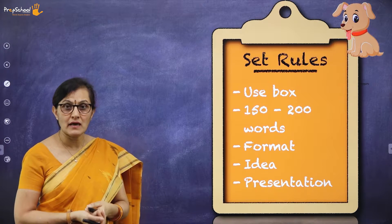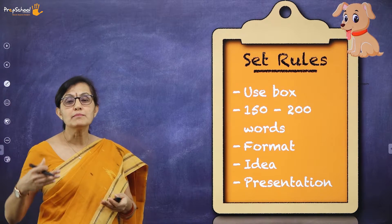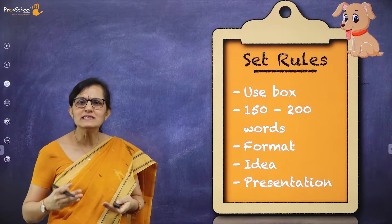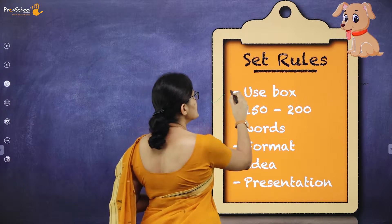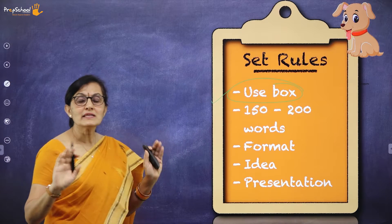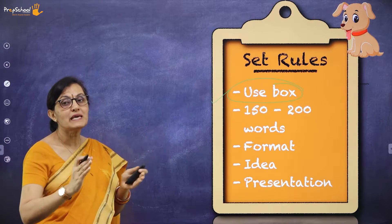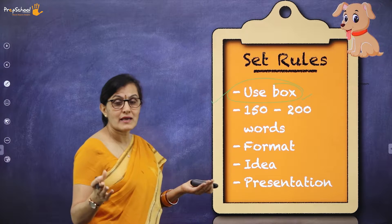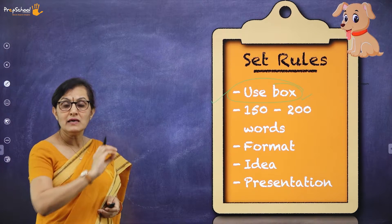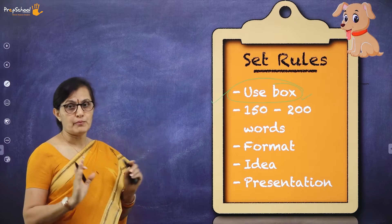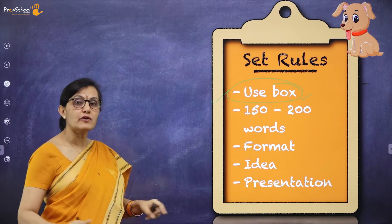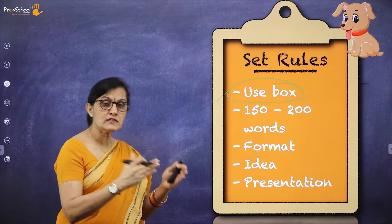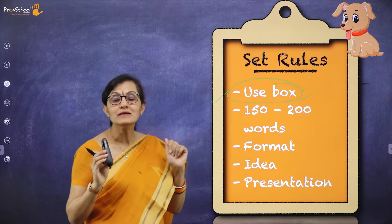What are the set rules? For all writing parts pertaining to your section B writing skills, there are certain set rules. The first one is use a box — but it is optional for speech writing. You may put it in a box or you may not; it is not that important. You can just start writing without a box, or if you feel like drawing one, that is fine too. Either way it is acceptable.